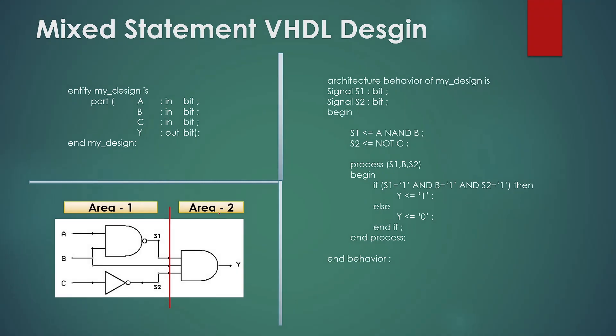Now let's take an example of mixed style having the concurrent statements and sequential statements. Before we start writing the architecture, just have a look to the schematic first. It is similar example we used in our last session. We segregated the structure in two sections, and we will be writing the concurrent statements for the area 1, and we will define the behavior for the area 2 inside the process for sequential execution. Now look at our architecture.